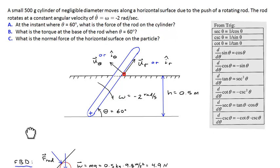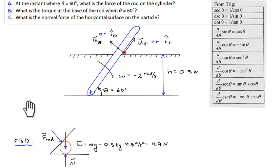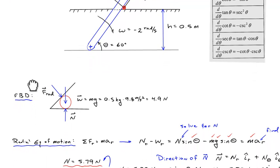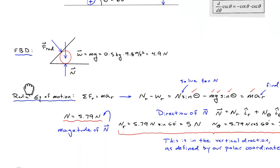The first thing to do in any problem is to draw a free body diagram. I saw a lot of you were doing a really nice job with this. You identified the fact that there are three forces acting on it: the contact force between the rod and the particle, gravity, and the normal force pushing up on it. With the free body diagram in mind, we need to draw both the radial and the tangential components of motion.